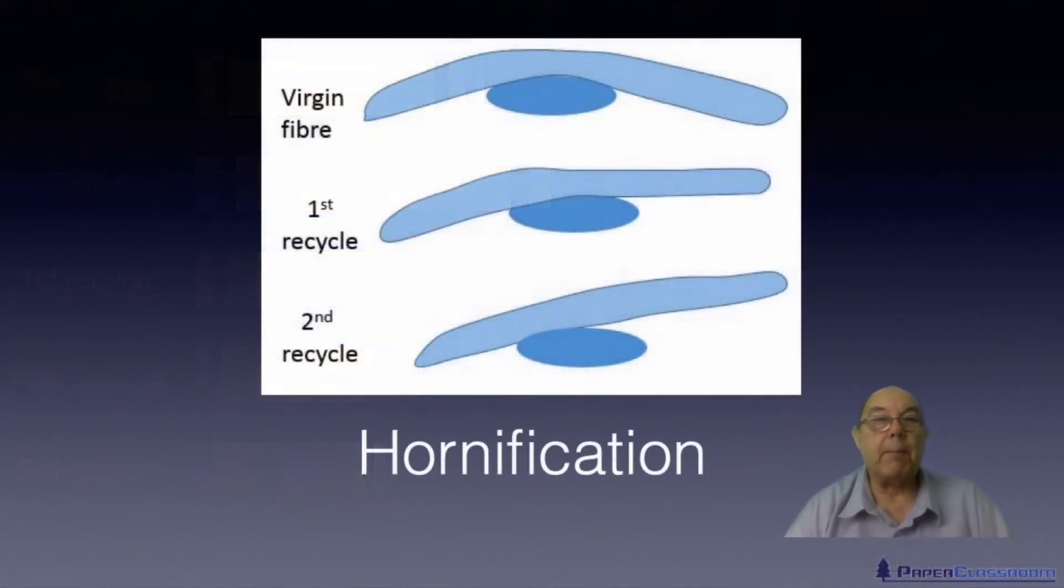So this is just an example of what's happening. We have our virgin fiber, it's very flexible, you've got lots of contact area here. When you recycle it and make another piece of paper, that fiber is now stiffer, so there's less contact area. So that means less bonding, so a weak piece of paper. And here's a second recycle, the fiber has become even stiffer, less contact area, less bonding, and so on.